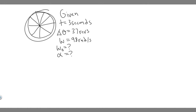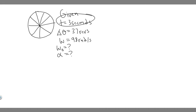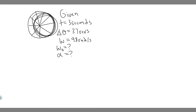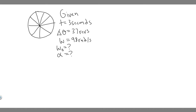Imagine this is our wheel. We know it's going to take 3 seconds, starting from whatever speed it begins at, to rotate 37 revolutions. After these 3 seconds, it's going to be going at 98 radians per second. So we know the time interval is 3 seconds, the change in angle theta is 37 revolutions, and the final angular velocity is 98 radians per second.